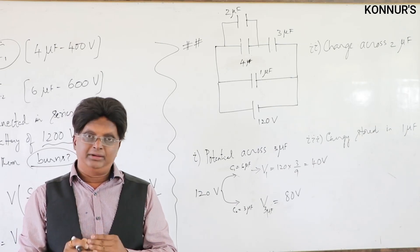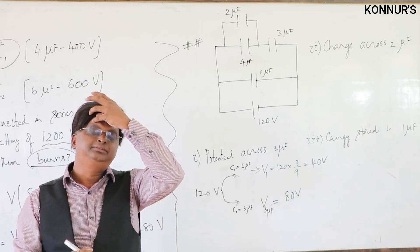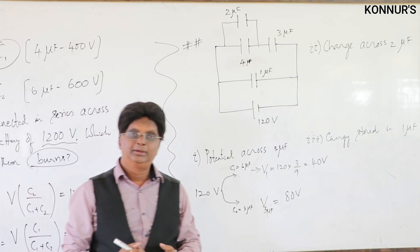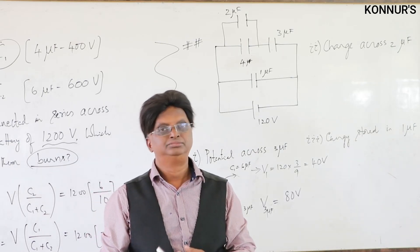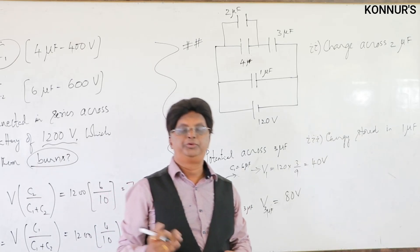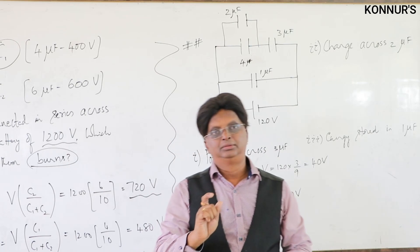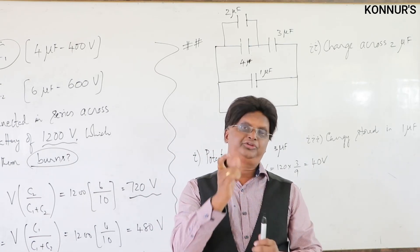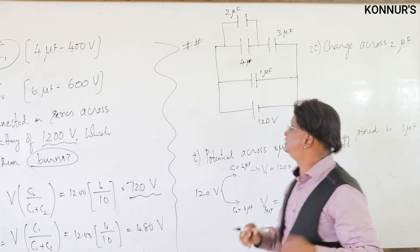Once individual potentials are found, use Q = CV to find charges, or U = ½CV² to find energy stored in each capacitor. The basis for all such examples is to divide the potential and find individual potentials first, then calculate charge or energy.